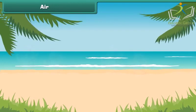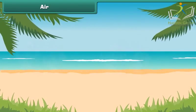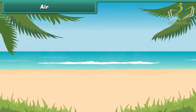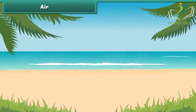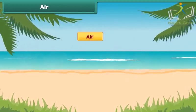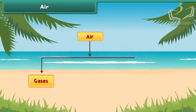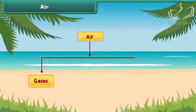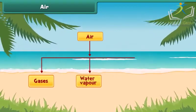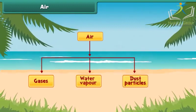At first, let's talk about air. Air, as we know, is present around us everywhere. It contains gases, water particles — which are also called water vapors — and dust particles.